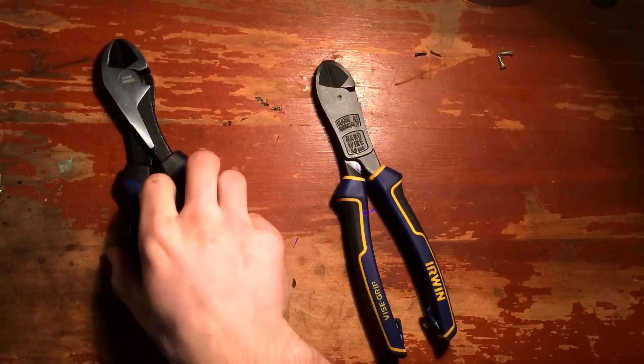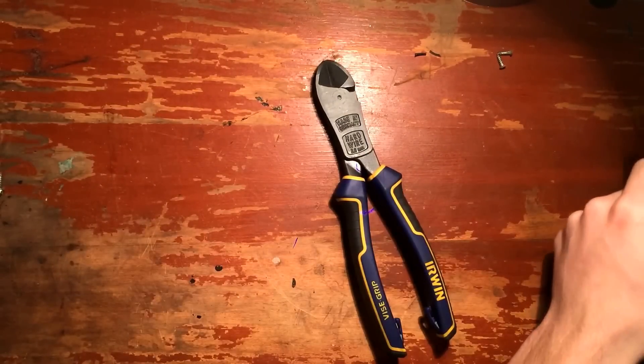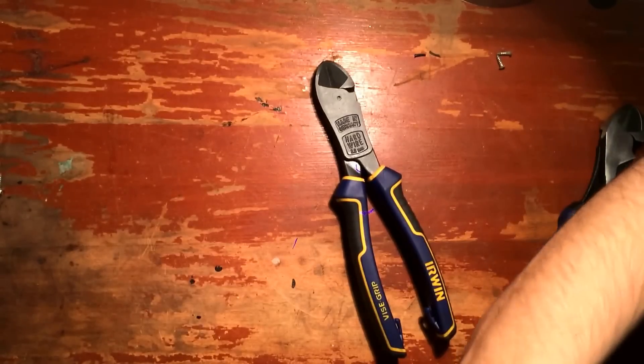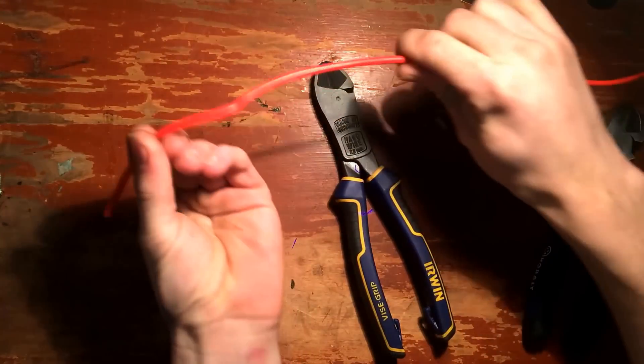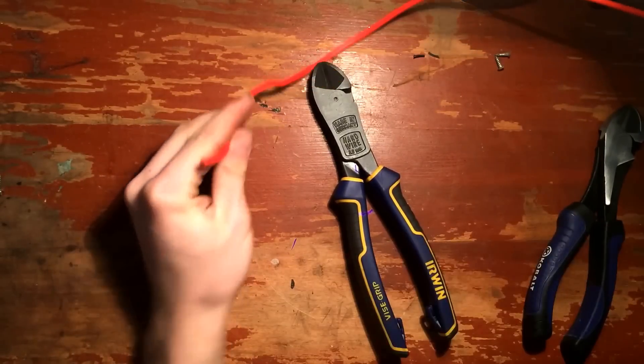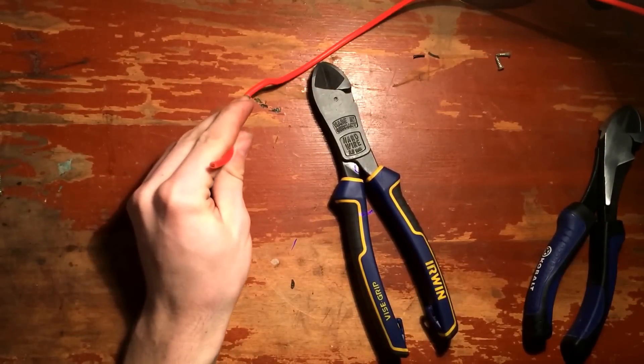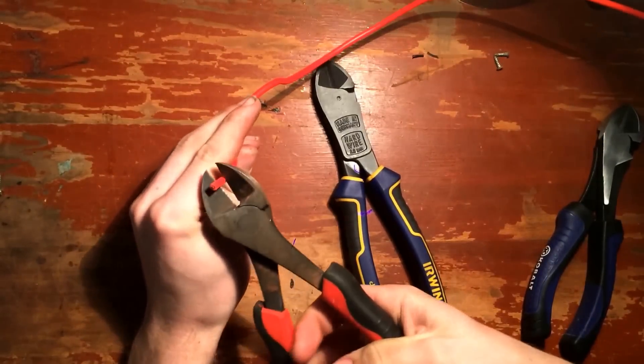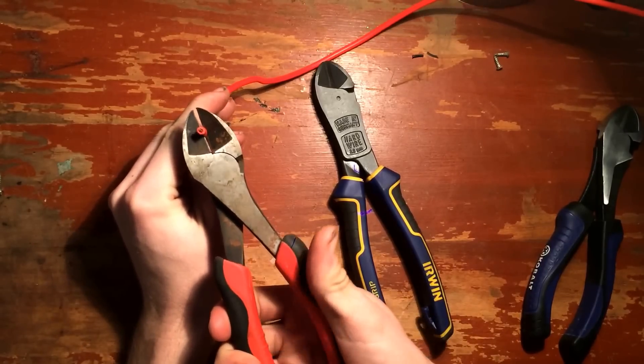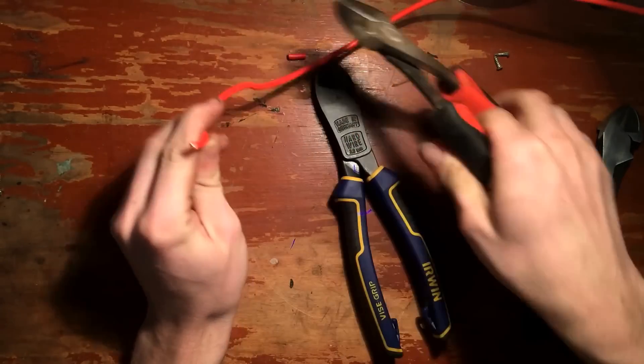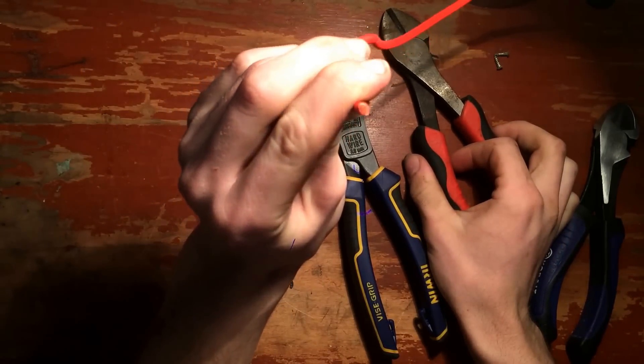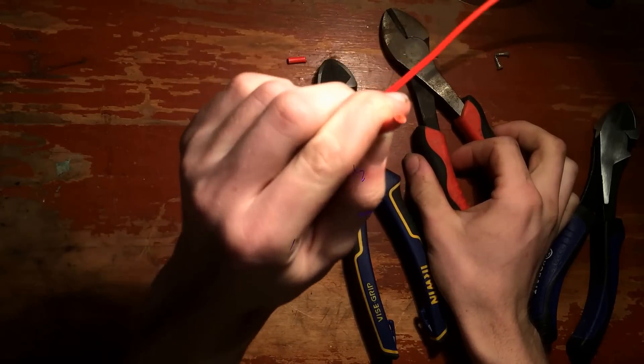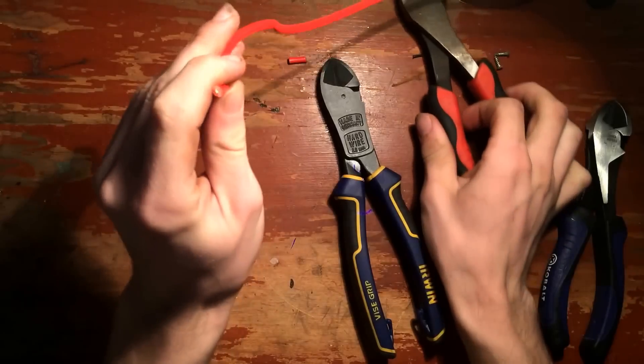So let's try this on some wire. So I got some 10 gauge wire. So here we got some 10 gauge. I started out with the Harbor Freight. There's a cut for that one. Not very nice. They cut it though.